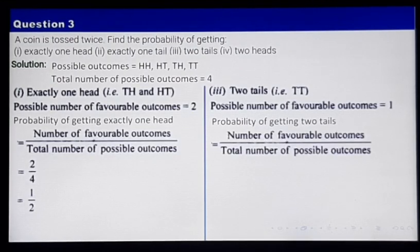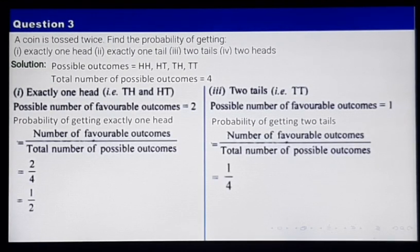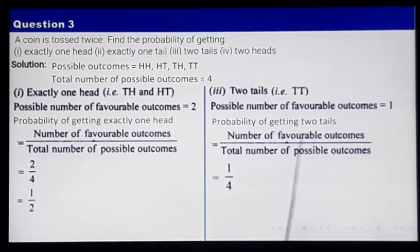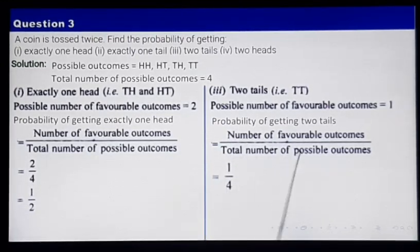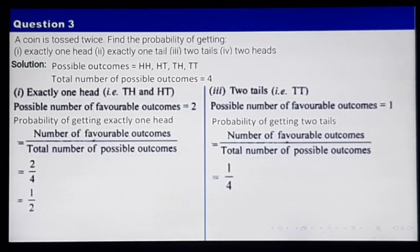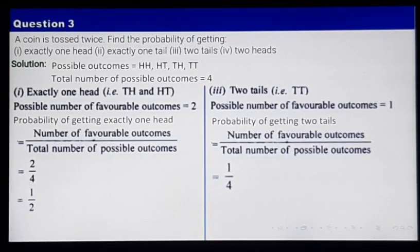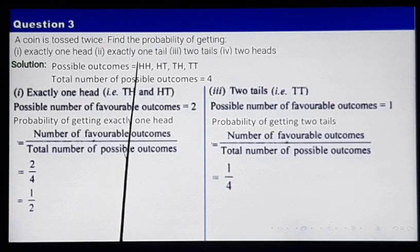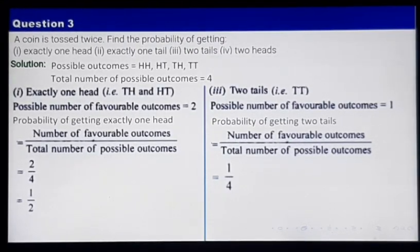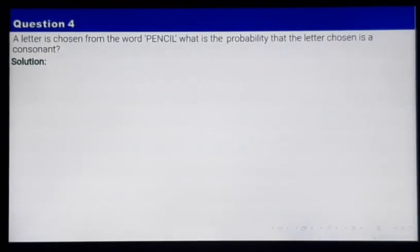The probability of getting 2 tails is 1 by 4, because the number of favorable outcomes is 1 divided by total number of possible outcomes which is 4. So my answer is 1 by 4. There are 2 parts left — question number 2 and question number 4 — you will try those by yourself. Let's move on to the next question.